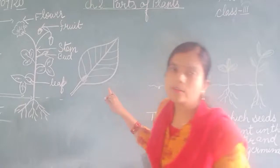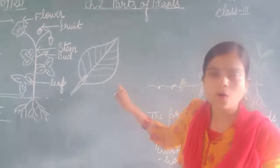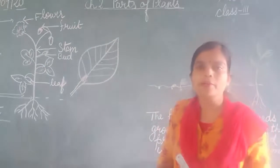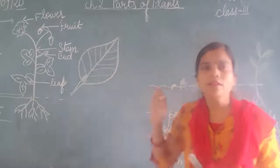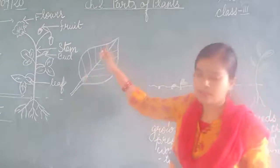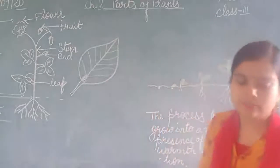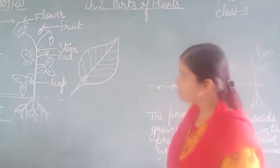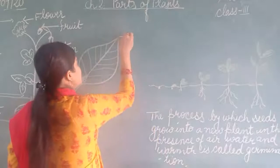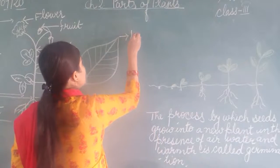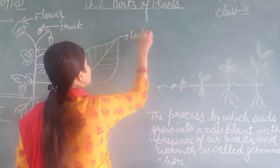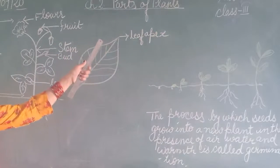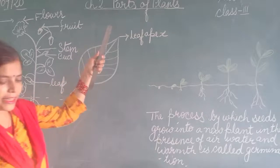Now here is the part of a leaf, or structure of a leaf. For showing the structure of a leaf, we have to draw the leaf first. You can see I have drawn one leaf here, and then we will show the different parts of the leaf. The tip of the leaf is known as the leaf apex.